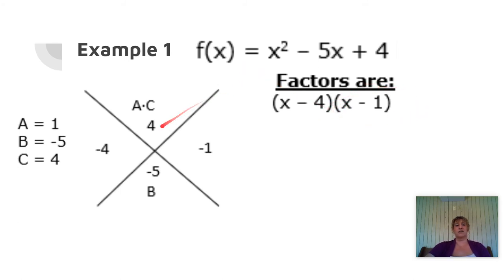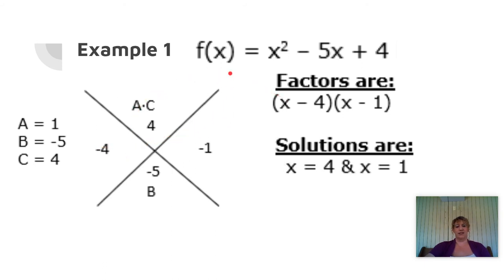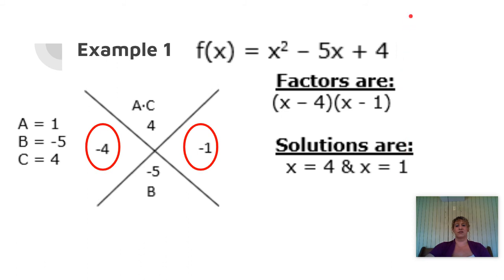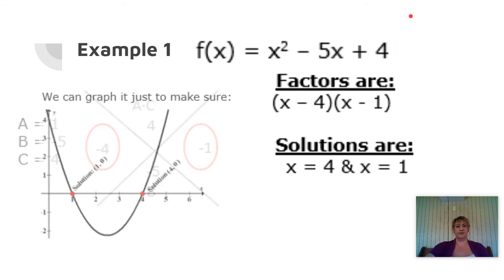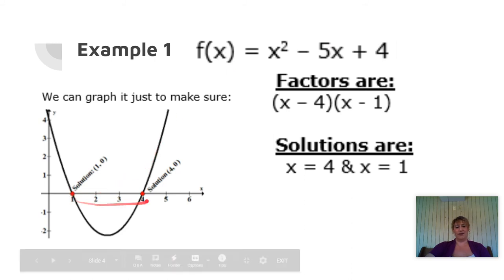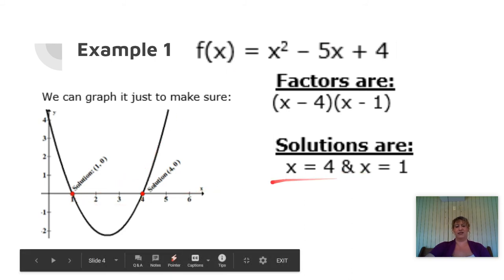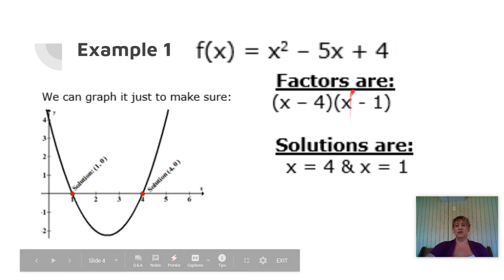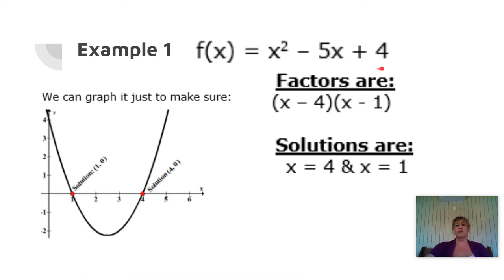My solutions are just going to be the opposite of the factors. So instead of negative 4, it's going to be positive 4, and instead of negative 1, it's going to be positive 1. If you look at the side pieces: negative 4 switches to positive 4 for our solution, and negative 1 switches to positive 1 for our solution. You can also graph it — here we have the function graphed, and indeed it's crossing at positive 1 and positive 4. So x equals 4 and x equals 1 are our two solutions, or zeros, or roots, or x-intercepts.